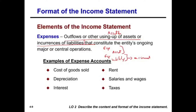Expenses are also a result of ongoing operation — the entity's ongoing major and central operation. Companies generate various expenses. For example, a merchandiser will have cost of goods sold. If a company has plant assets, they will have depreciation expense. If they borrow money, they'll have interest expense. They might be renting something. Obviously they will have salaries and wages, employees, taxes, insurance. Any expense that's going to help run the company is considered an expense.